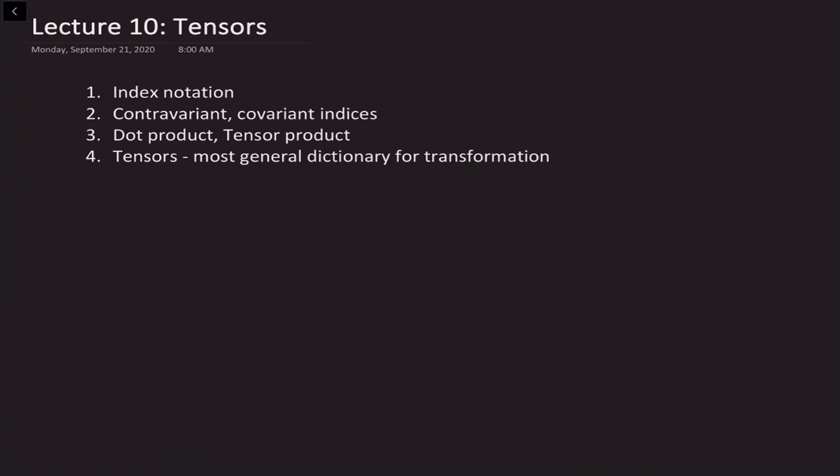Then we'll discuss specifically the idea of what are called contravariant and covariant indices. One important thing is that these indices do not represent different objects but they're just a different way of representing the same objects. Then we'll talk about dot products, which we discussed before for four-vectors using matrix notation, and we'll discuss what this looks like in index notation. It's here that the use of upper and lower indices simplifies the way in which we write down dot products.